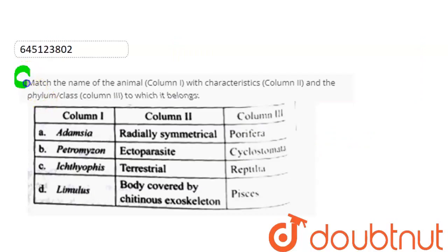Hello, students! Let's start the question. Question here is, match the name of animal column 1 with characteristic column 2 and select the class of island in column 3.